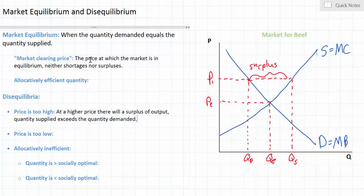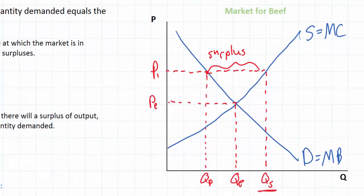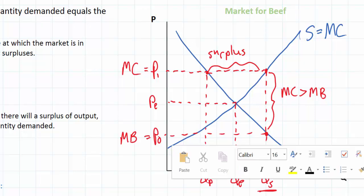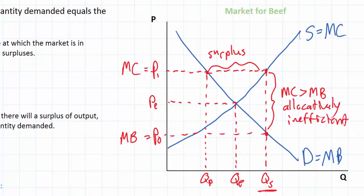At P1, QS units of beef will be supplied, but consumers place a value of only P0 on that quantity. P0 represents the marginal benefit consumers derive from QS units of beef. However, the cost of producing QS units — represented by P1 — is higher than the benefit consumers derive. At QS, we have an inefficient allocation of resources because the marginal cost to producers exceeds the marginal benefit to consumers. When marginal cost of production exceeds marginal benefit of consumption, we say the market is allocatively inefficient. Only when quantity demanded equals quantity supplied can the market be said to be efficient, because benefits from consumption equal costs of production.